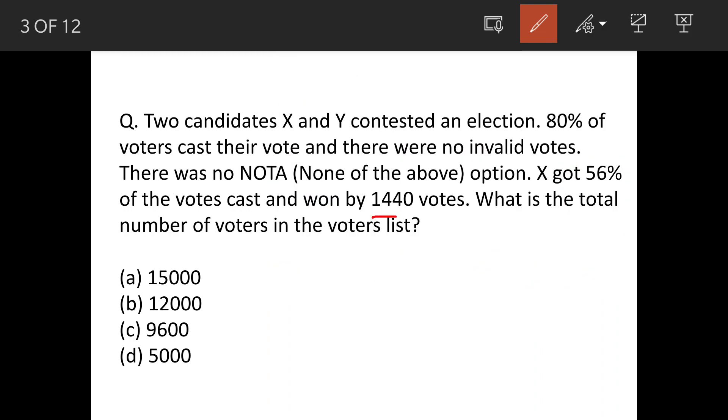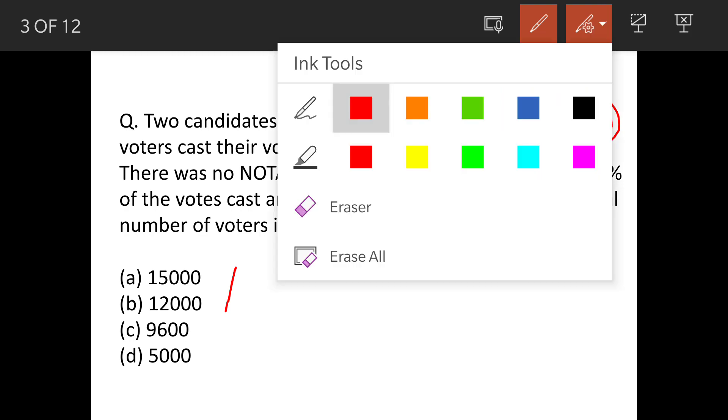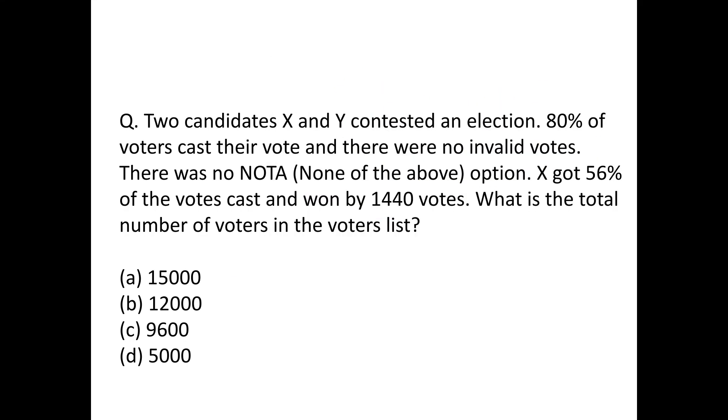X has won the election by 1440 votes. What is the total number of voters in the voter list? The options are given. 80% of people have cast votes, meaning 20% more are in the list. We have to find the total number of voters. Let's see.